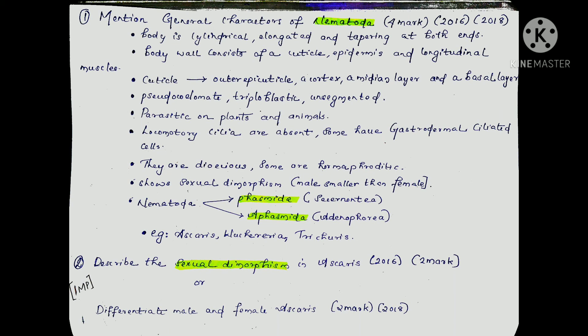Body is cylindrical, elongated, and tapering at both ends. Body consists of a cuticle, epidermis, and longitudinal muscles. Cuticle has an upper epicuticle, a cortex, a median layer, and a basal layer. They are pseudocoelomate, triploblastic, and not segmented.